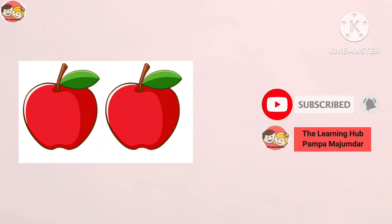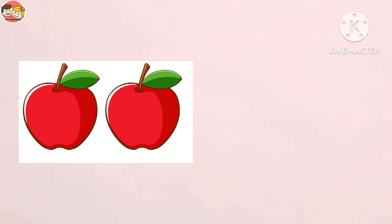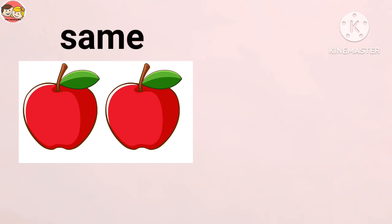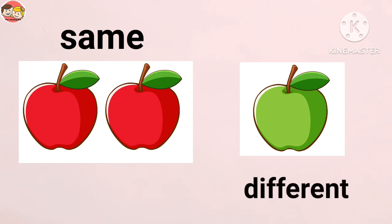Now we are going to look at some pictures. We have to observe them very carefully and identify which one is the same and which one is different. Look, children — here are two apples. They are both red and the same size, so they are the same. This one is also an apple and the same size as the other two.